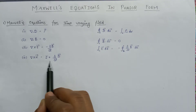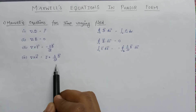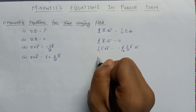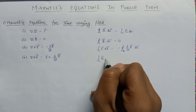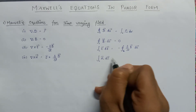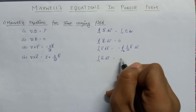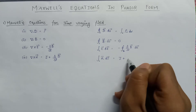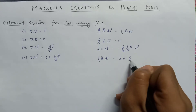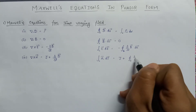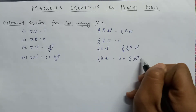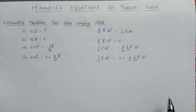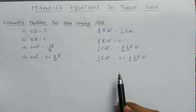Maxwell's fourth equation is del cross H equals J plus del D by del t. In integral form it is represented as the line integral of H dot dl equals the integral of J plus del D by del t dot dS. This covers Maxwell's four equations for the time-varying field.